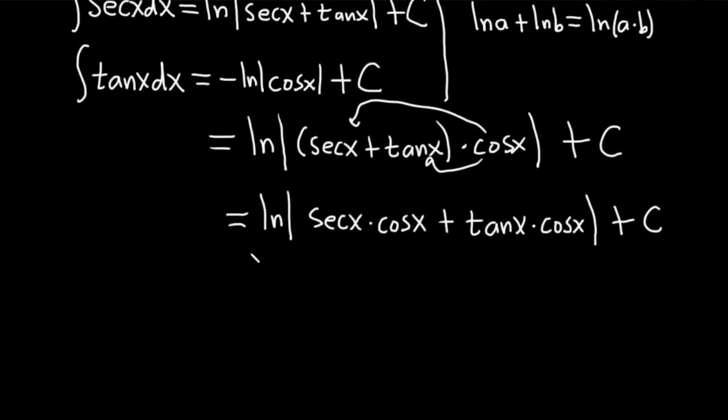And so now we can use basic trig identities, like really basic ones. This is the natural log, absolute value. Secant is 1 over cosine, that's times cosine. Plus, and then we have tangent, which is sine over cosine, times cosine. We have the absolute value, and then the plus C.